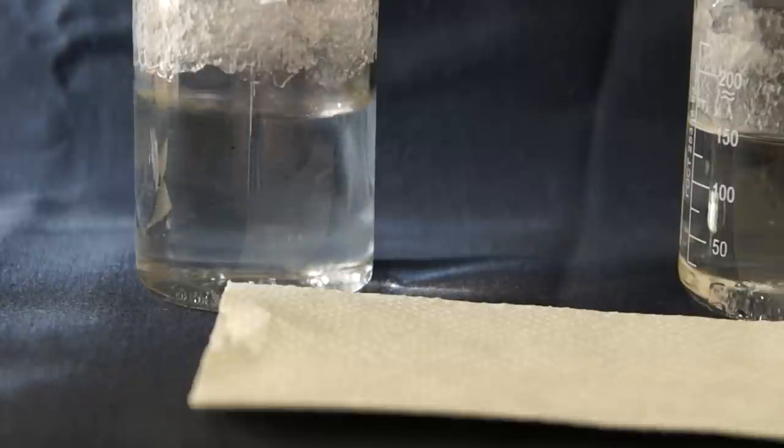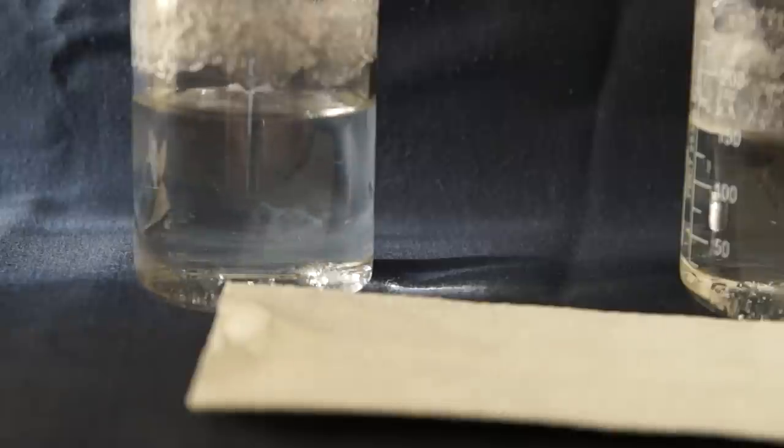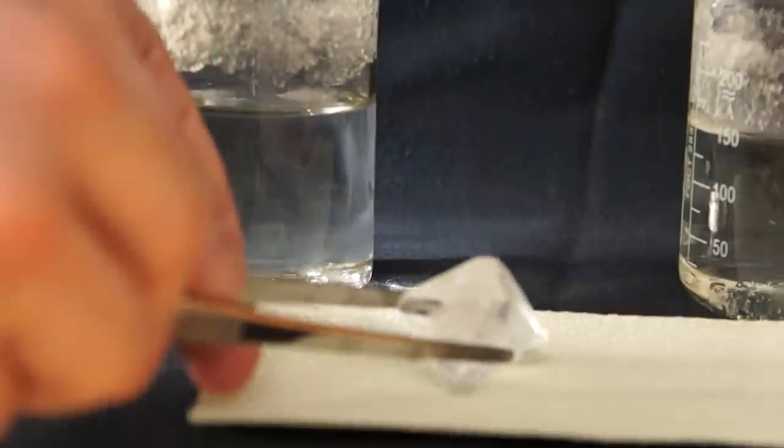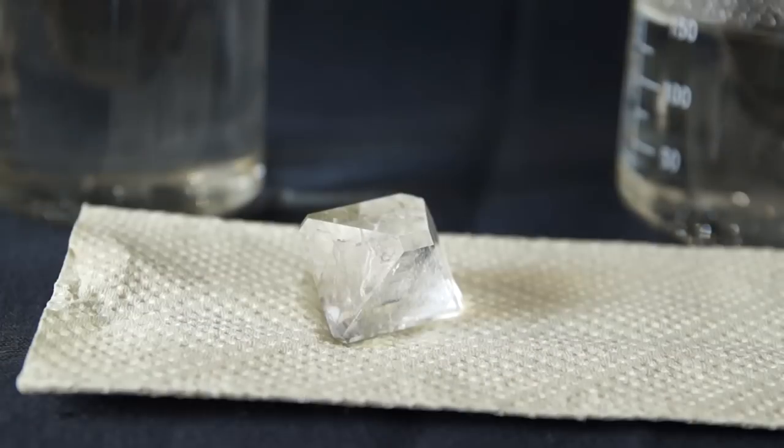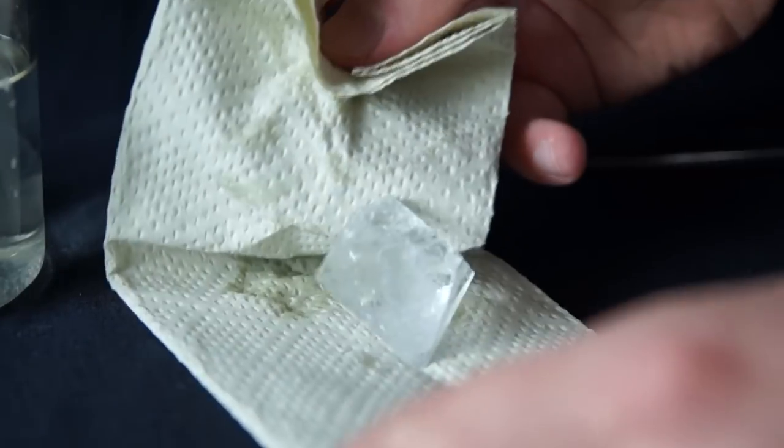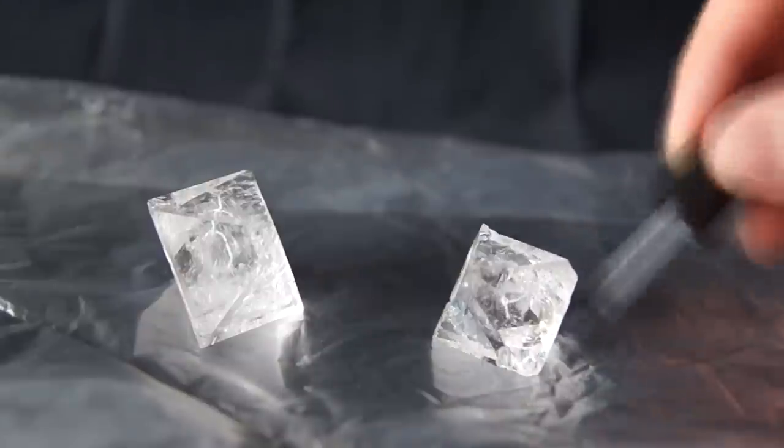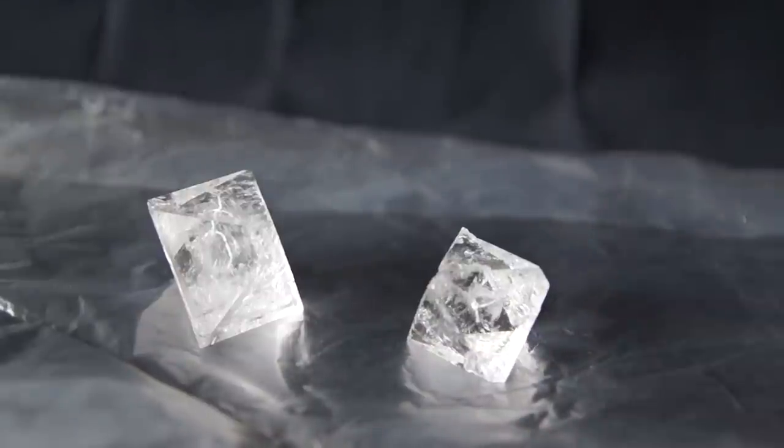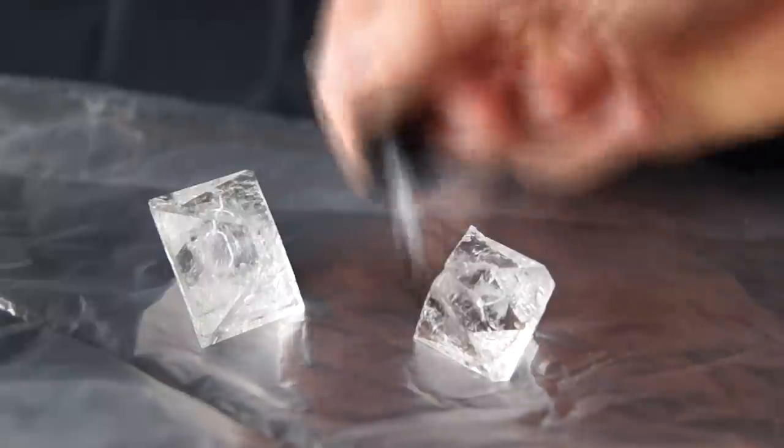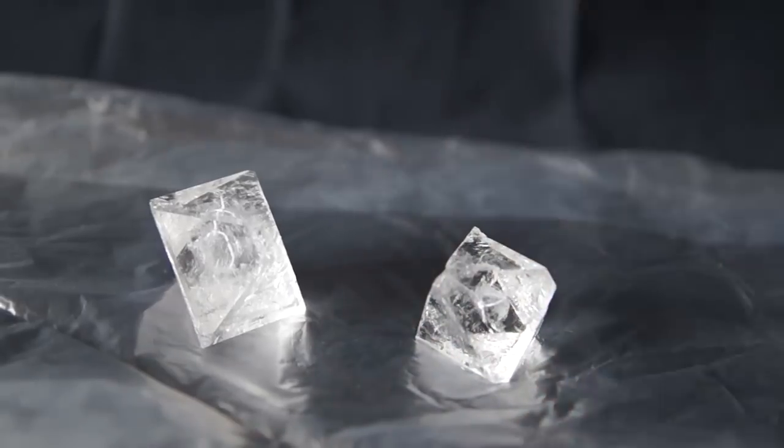Once we have decided that our crystal is large enough, and we want to stop its growth and put it on the shelf, we need to do some more steps. Let's take out our crystal from the solution and dry its surface using a cloth. Next, we need to cover our crystal with a colorless nail polish. Just one or two layers is enough. This protects the crystal from drying and eventual destruction.